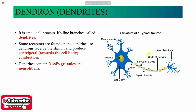These small cell processes are called dendrites, and some receptors are found on the dendrites — this is an important point. Because there are dendrites, there are many receptor-like bodies present. There are receptors present to receive signals. If there is a change in the environment or a chemical substance, they can receive and respond to it. The receptors are found on the dendrites — they receive impulses and conduct them centripetally toward the cell body.